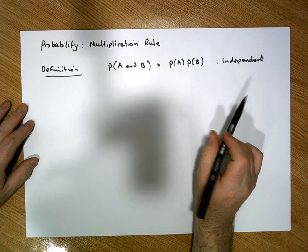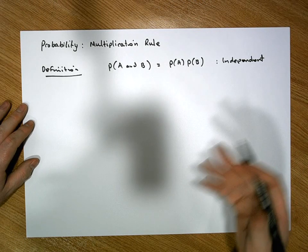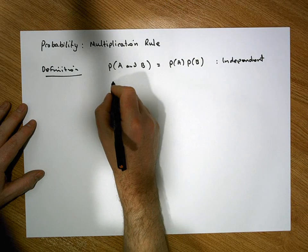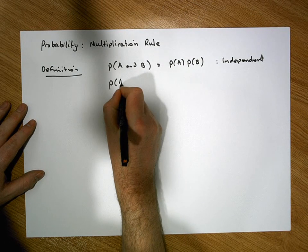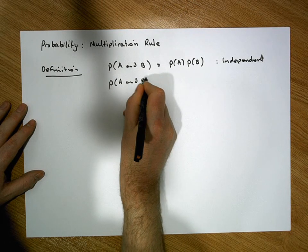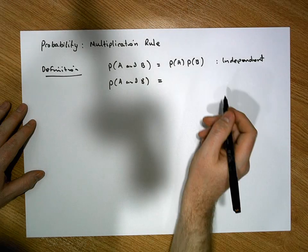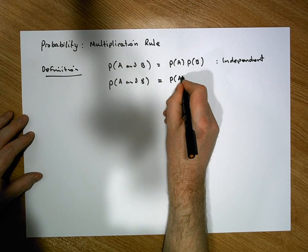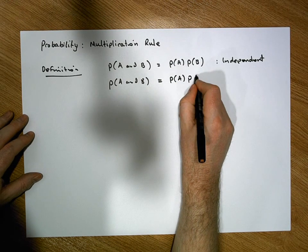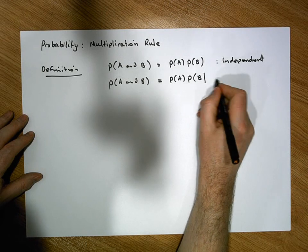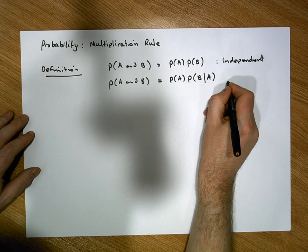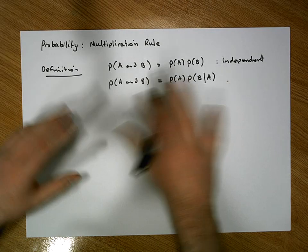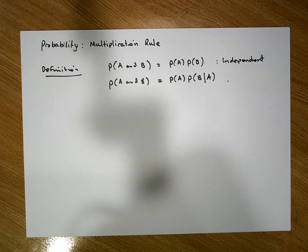When events A and B are not independent of each other, we have to make a small modification. The probability of A and B, knowing that A and B are not independent, is simply equal to the probability of A times the probability of B conditioned on A.